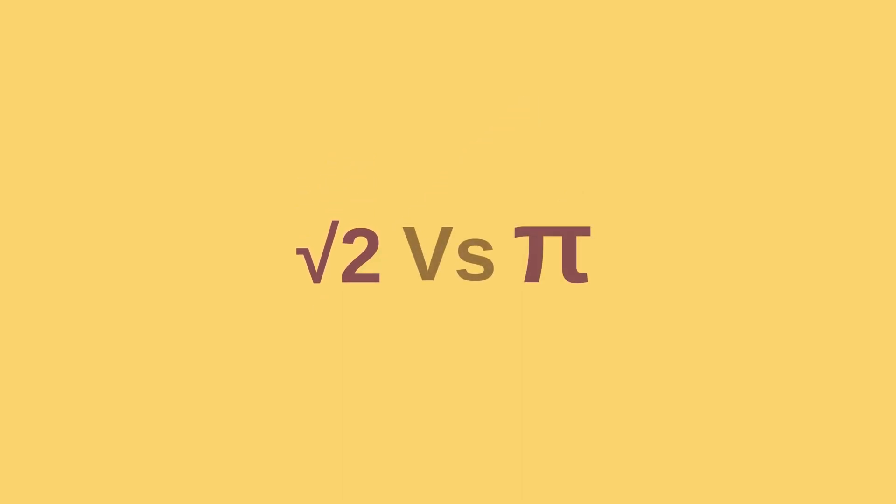So what makes π different from √2? This is where another number classification comes into play.